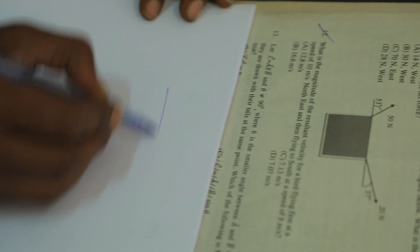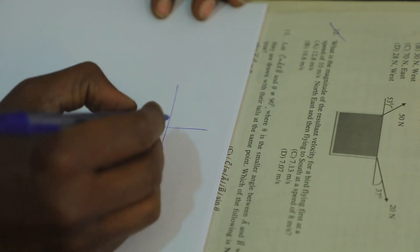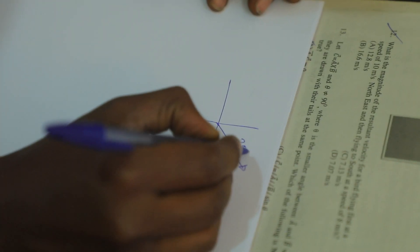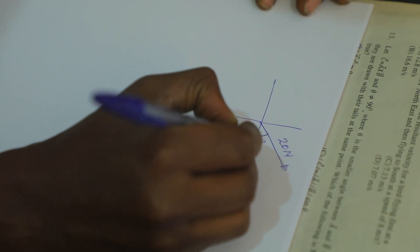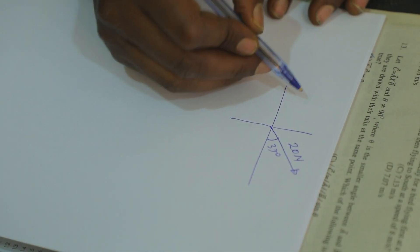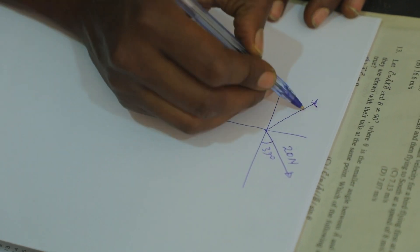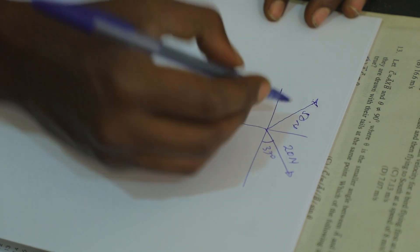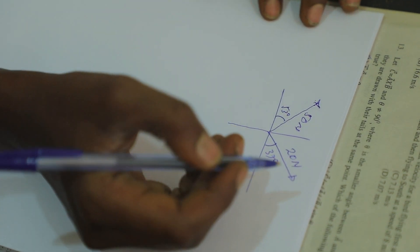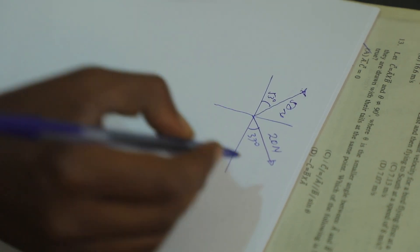In the x-y diagram, one vector is 20N at 37 degrees towards the horizontal. The other vector is 55N at 53 degrees. These define the horizontal components we need to resolve.